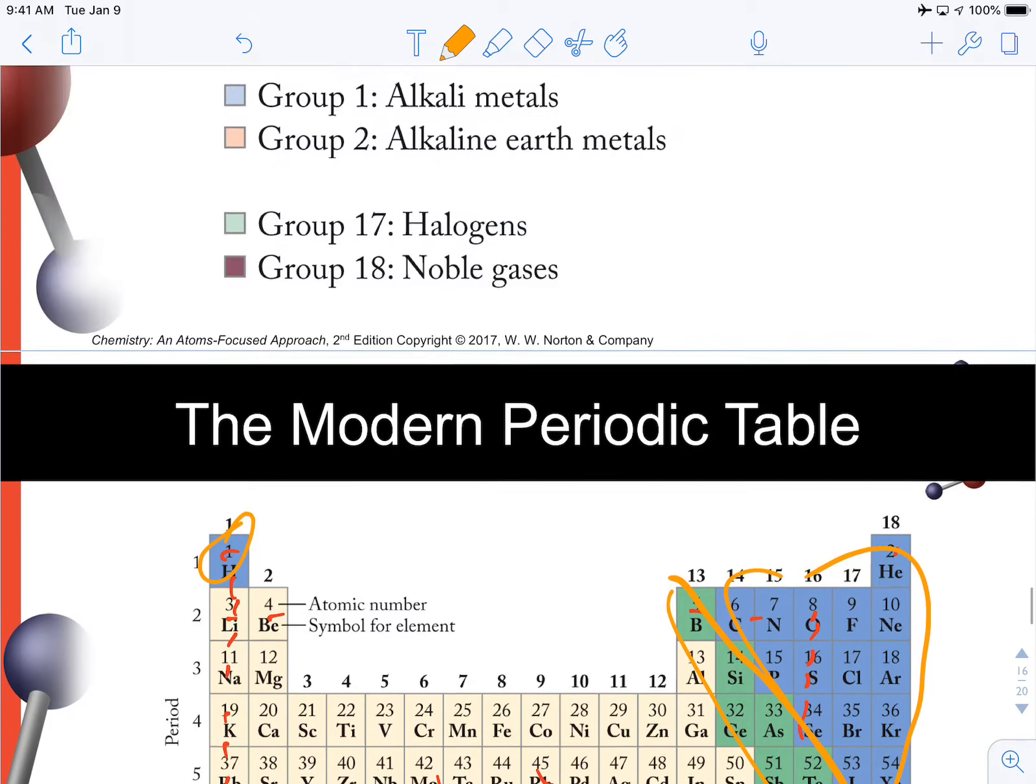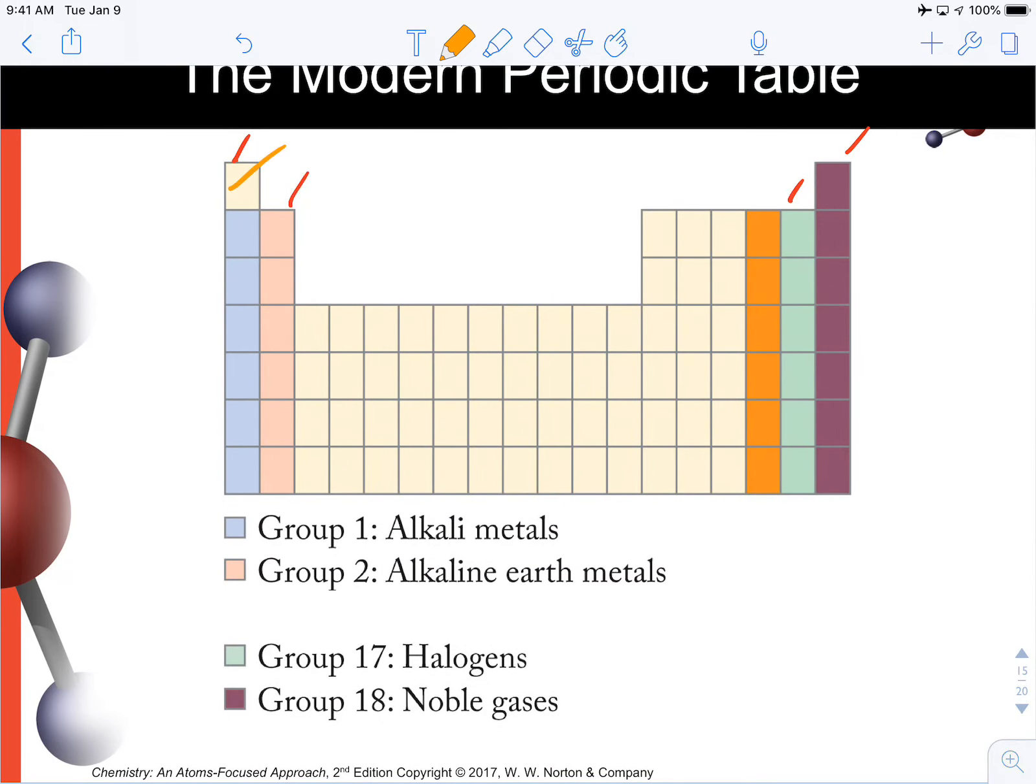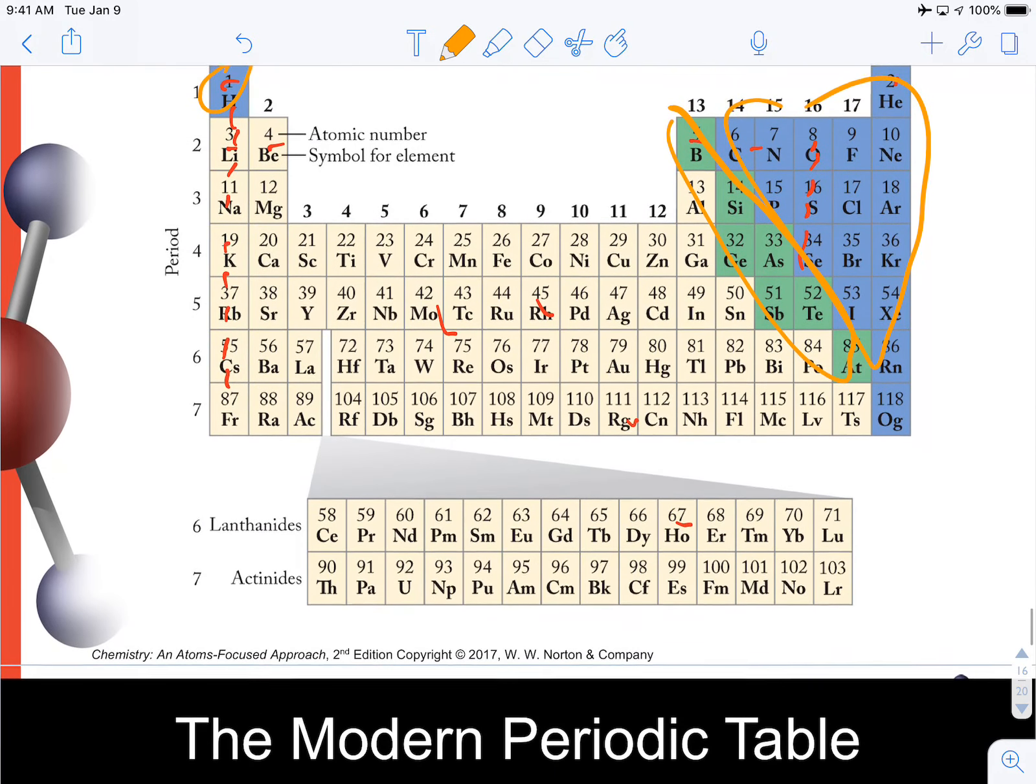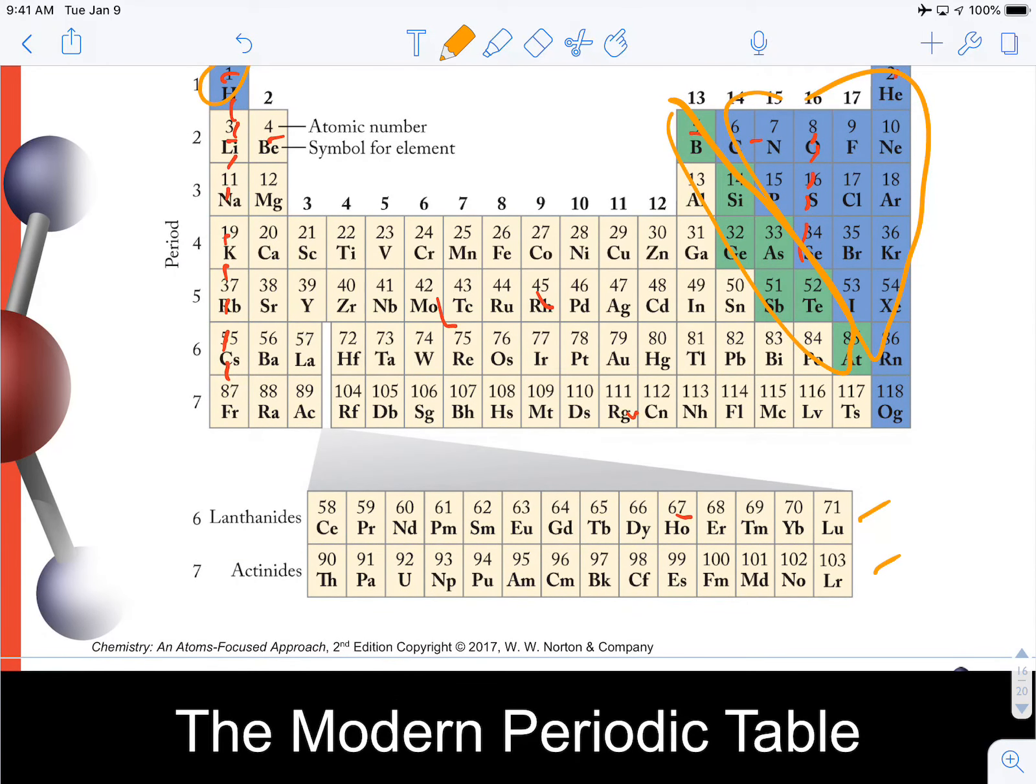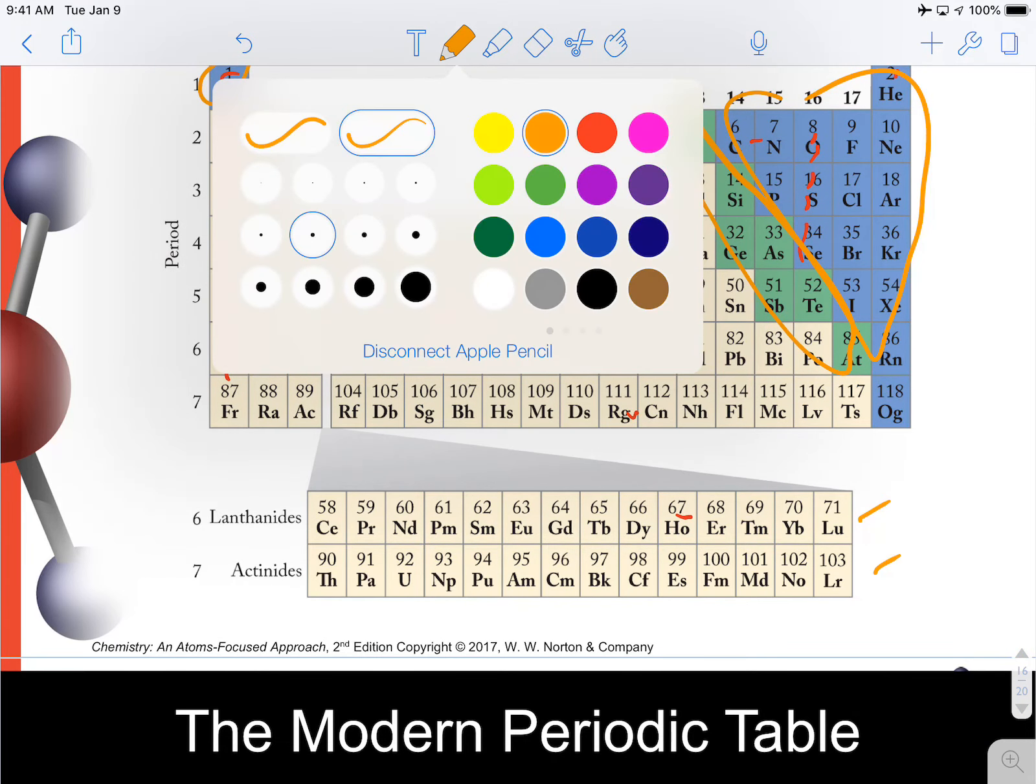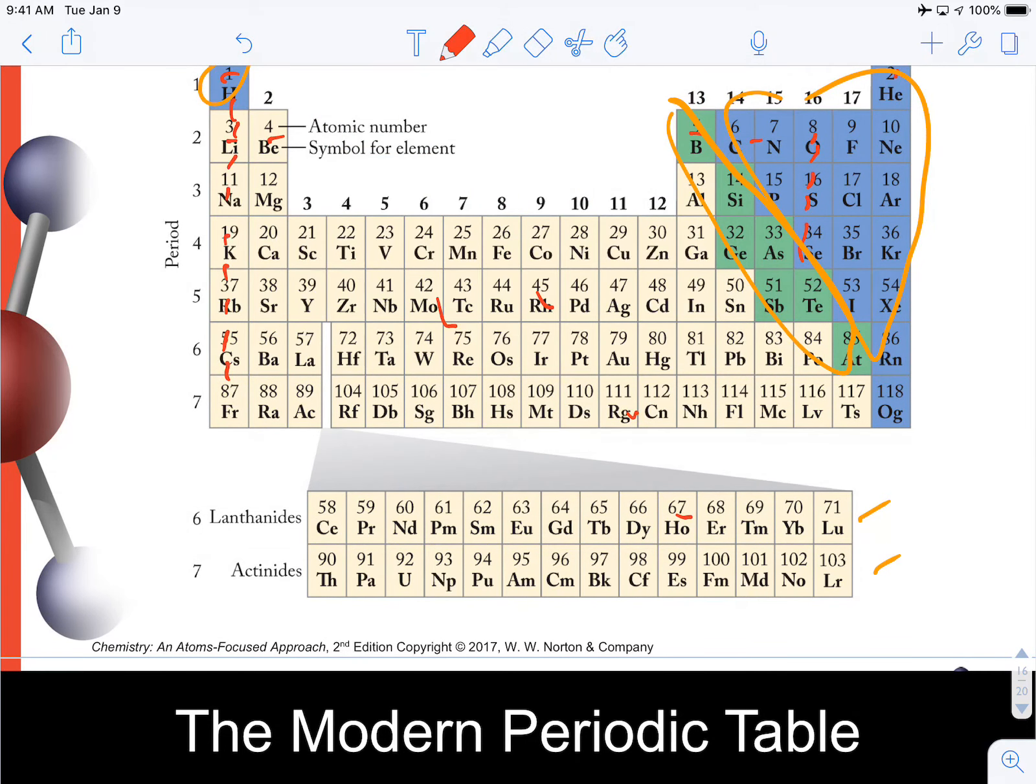These are known as our representative elements. All of these are representative elements, here, here, here, and all of these are representative. These are our transition elements. These guys right here are transition elements. These are often called our inner transition elements. You've got your lanthanide and actinide series here. So you need to get familiar with some of these things.